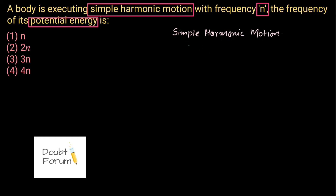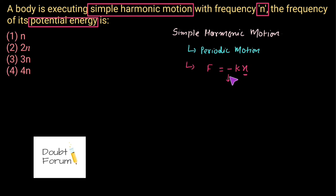Simple harmonic motion is a special type of periodic motion in which the object repeats its motion after a certain period of time. The restoring force of a simple harmonic motion is given by F equals minus k times x, where x represents the displacement from the mean position. The minus sign shows that the restoring force always acts towards the mean position.